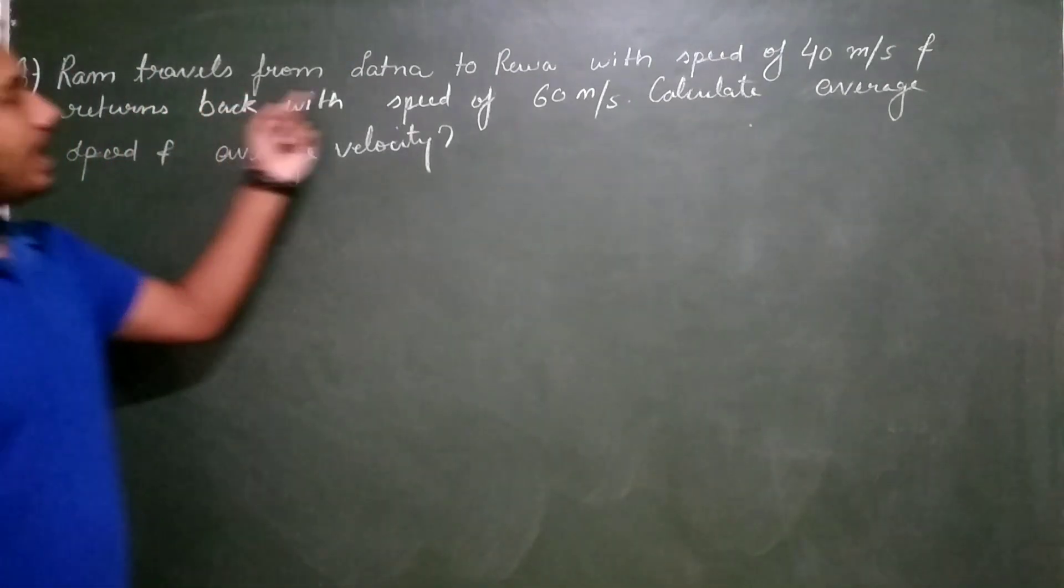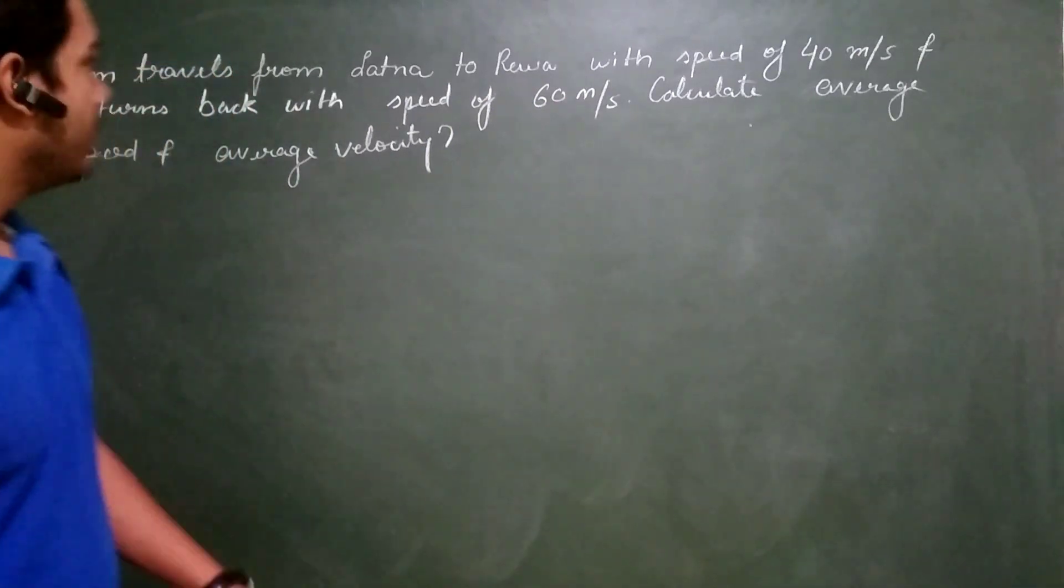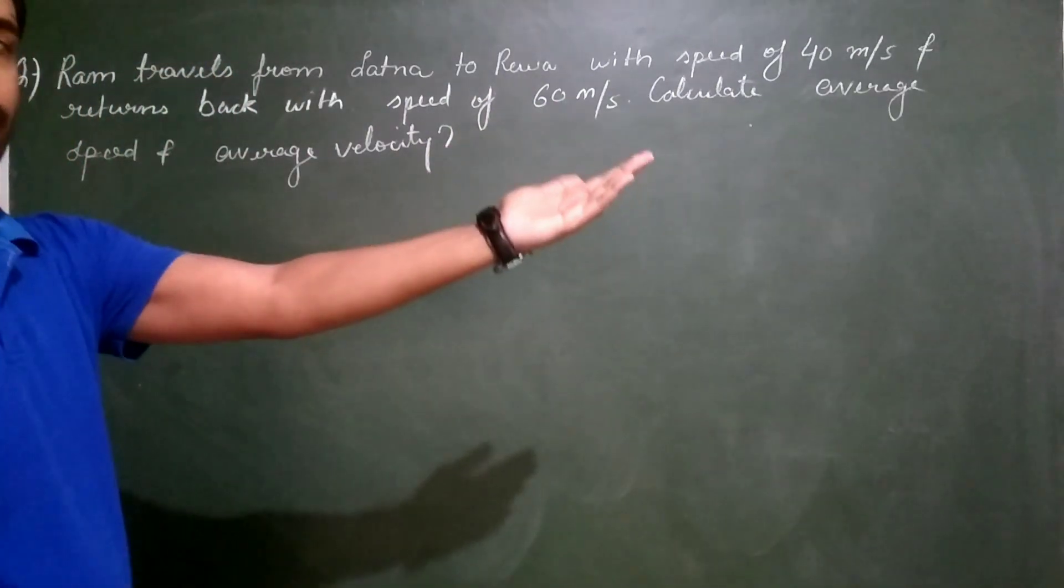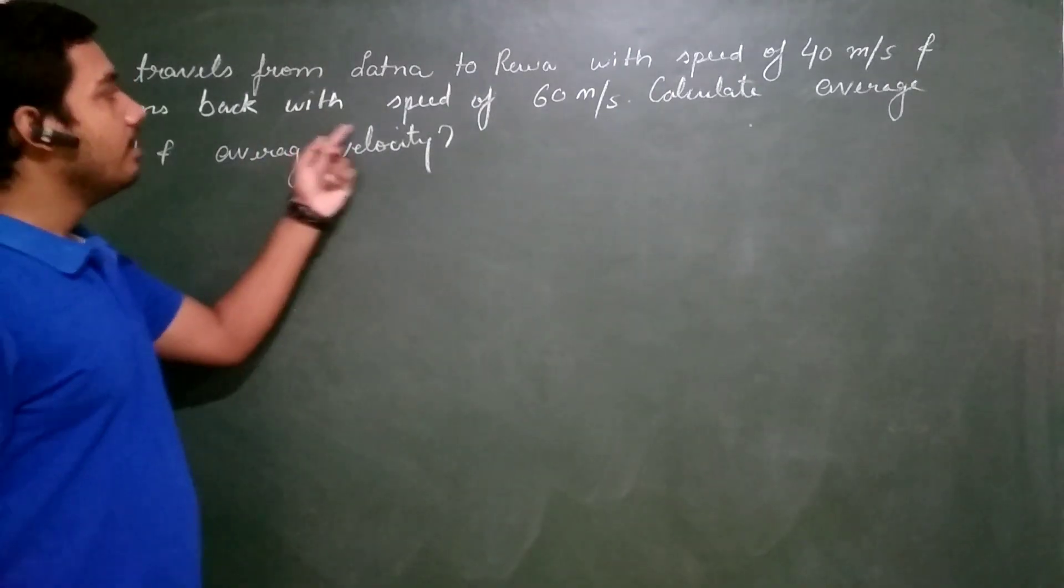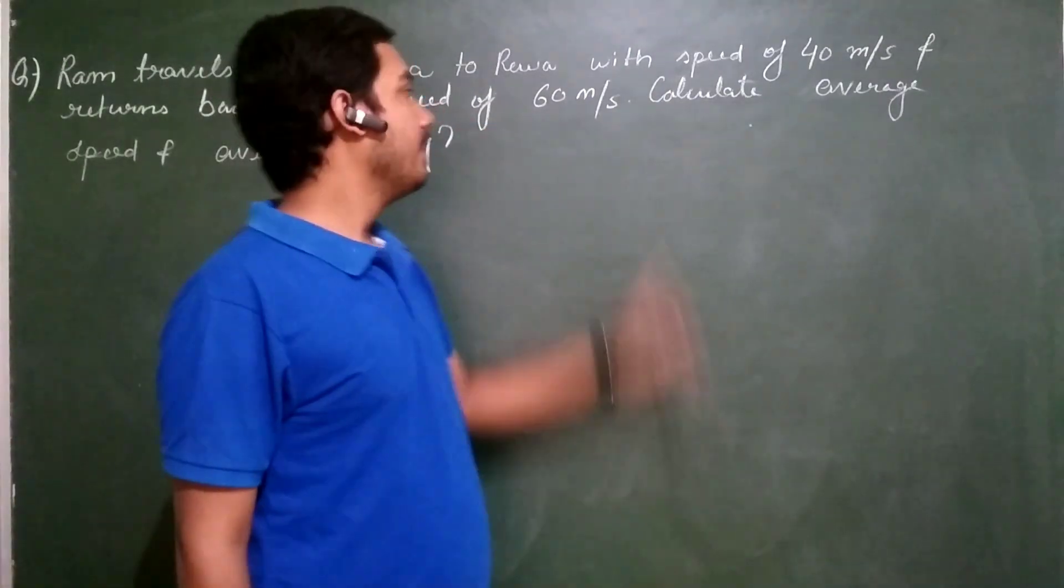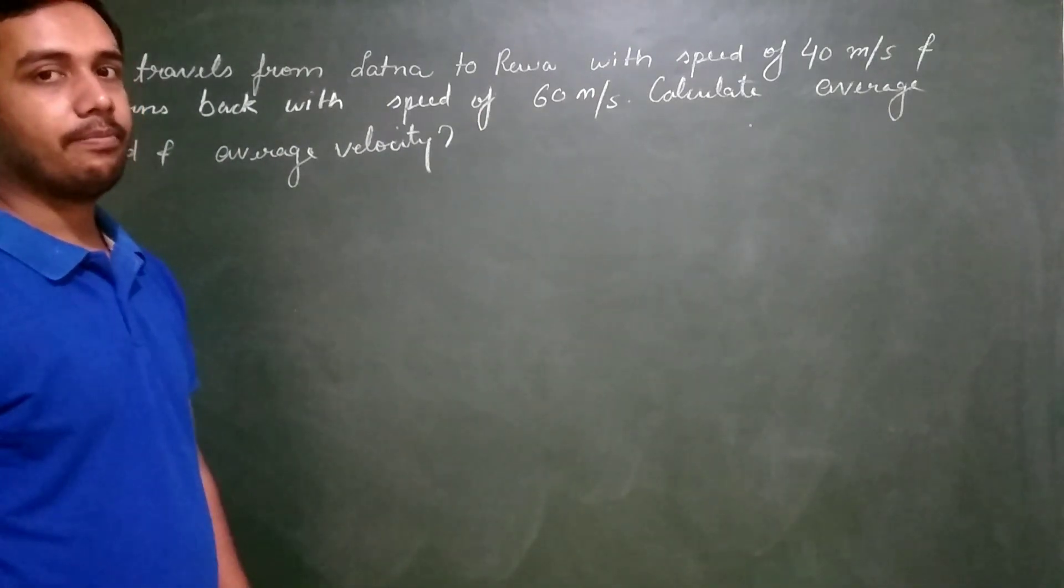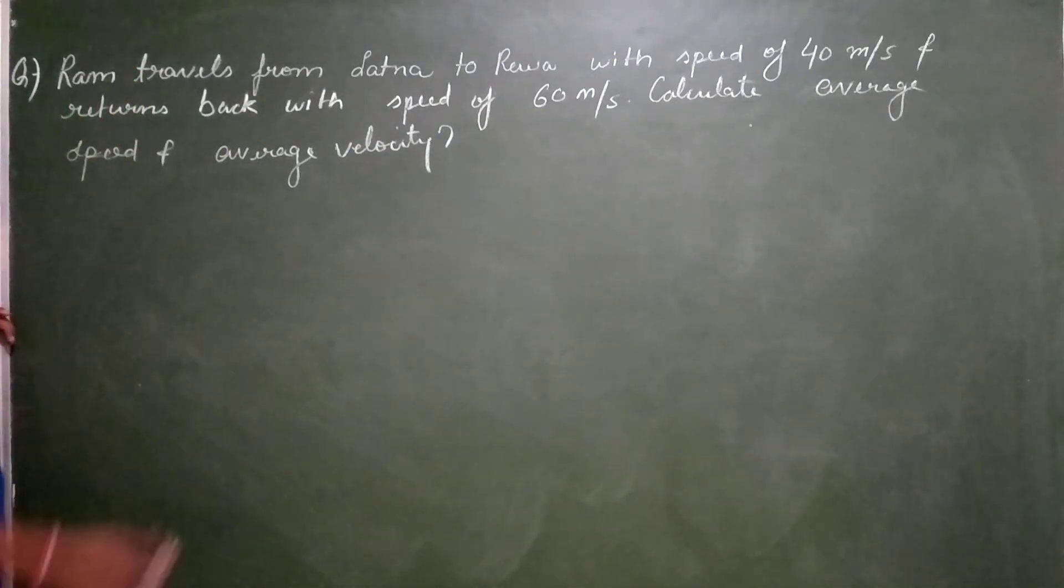Ram travels from Satana to Riva with speed of 40 meter per second and returns back. He is returning back from Riva to Satana with speed of 60 meter per second. Calculate average speed and average velocity. Now the first thing very simple.